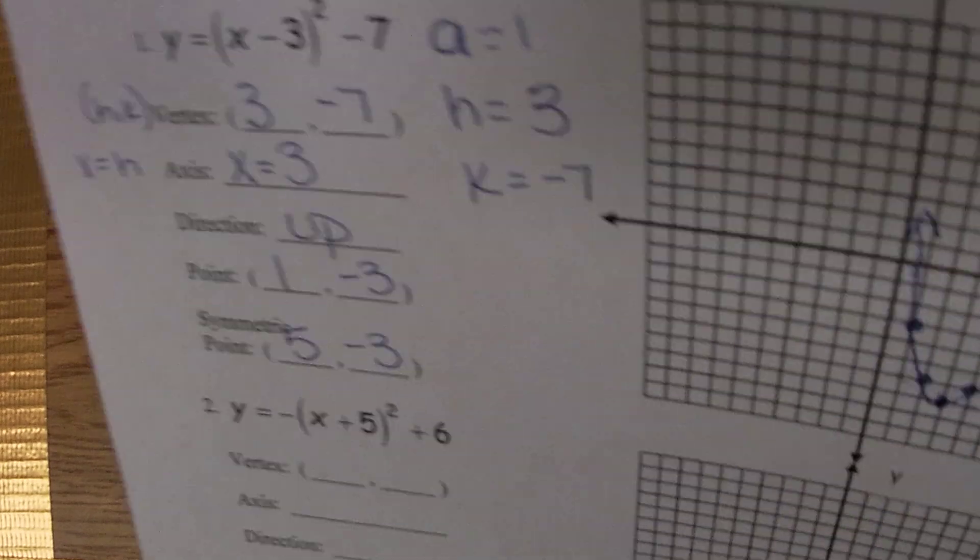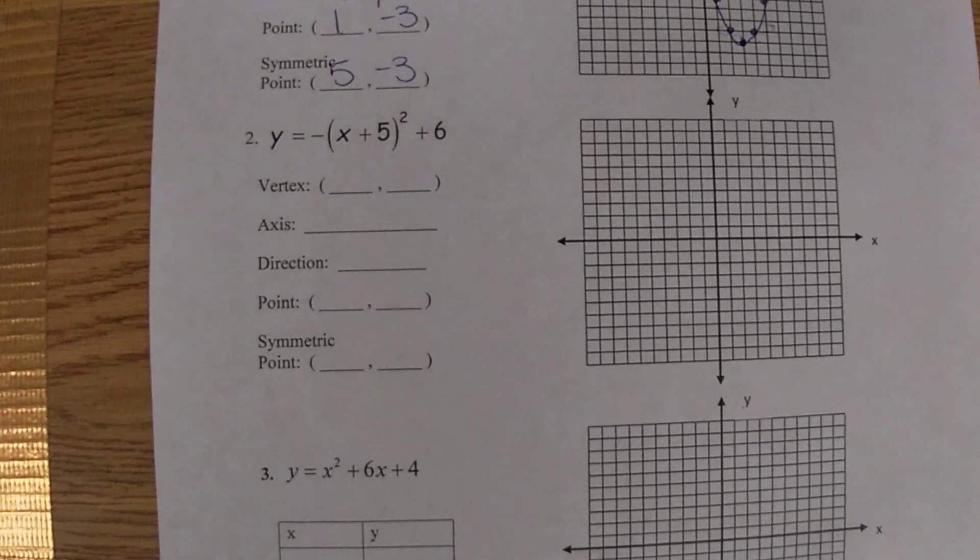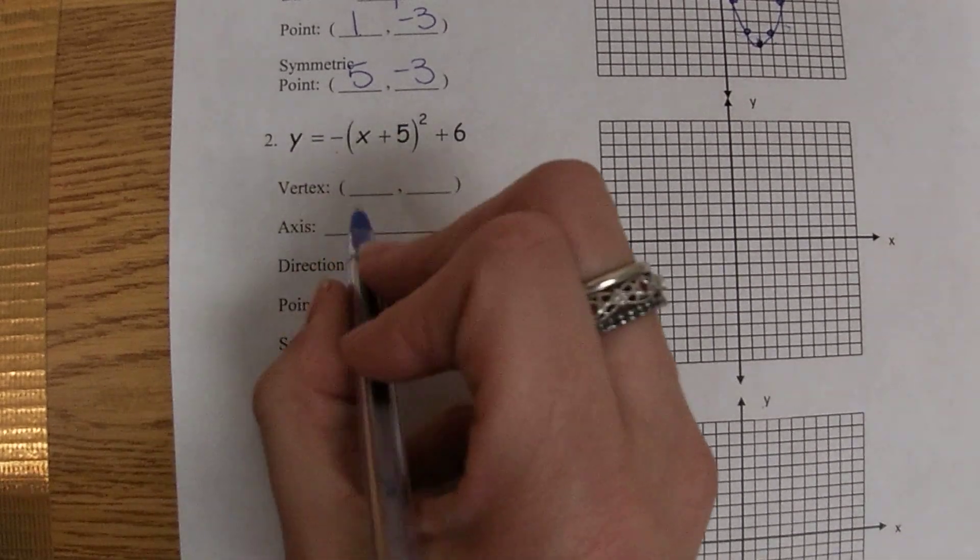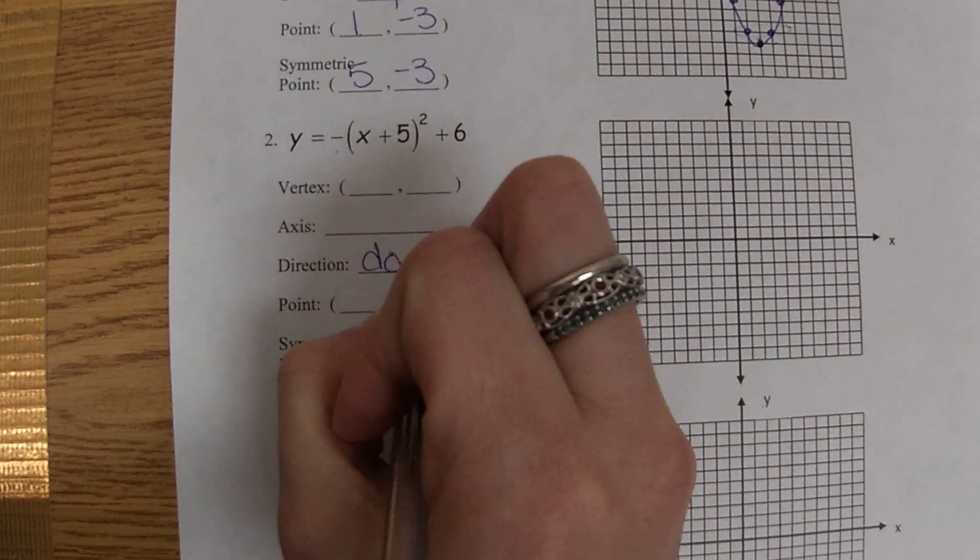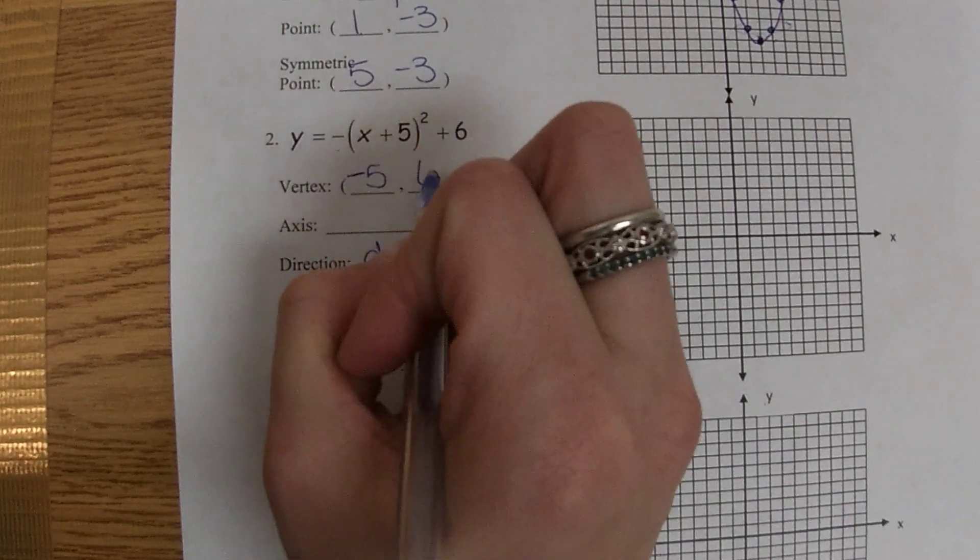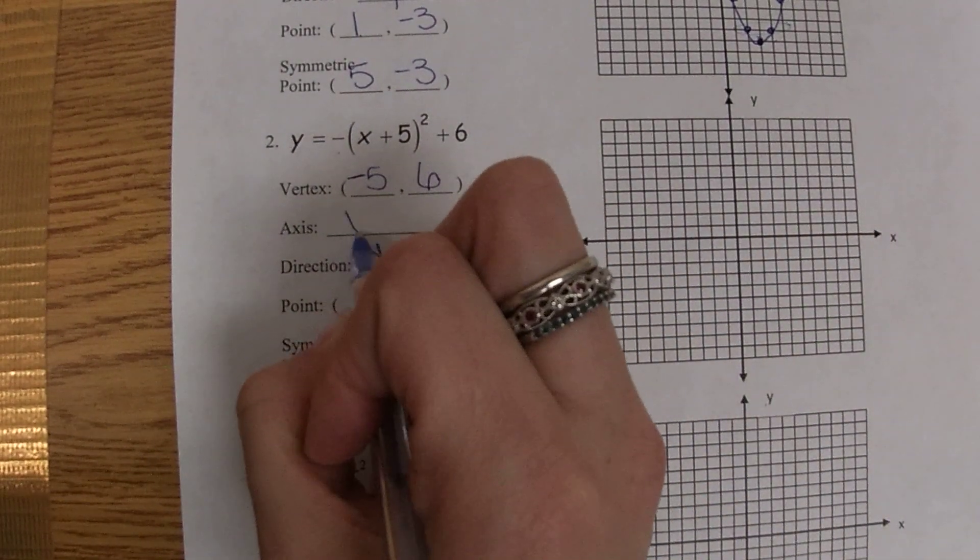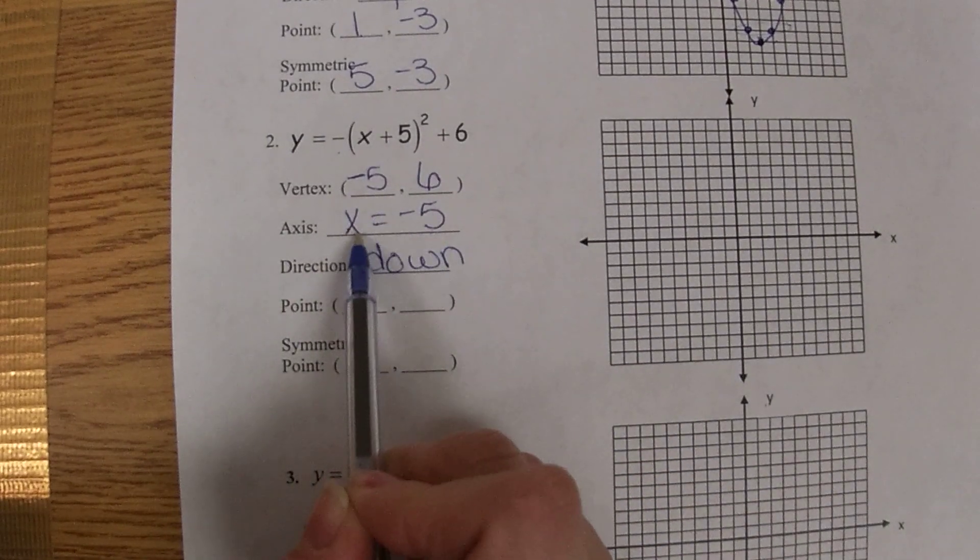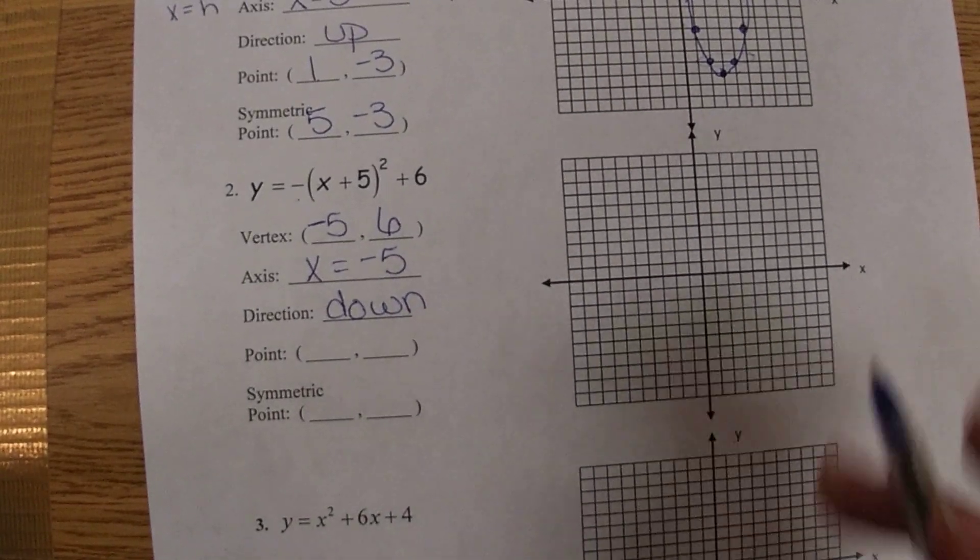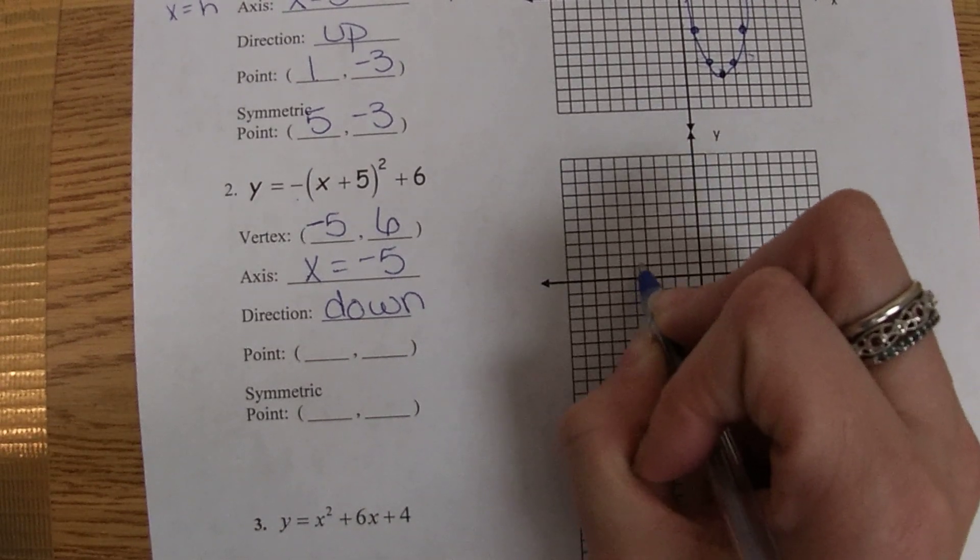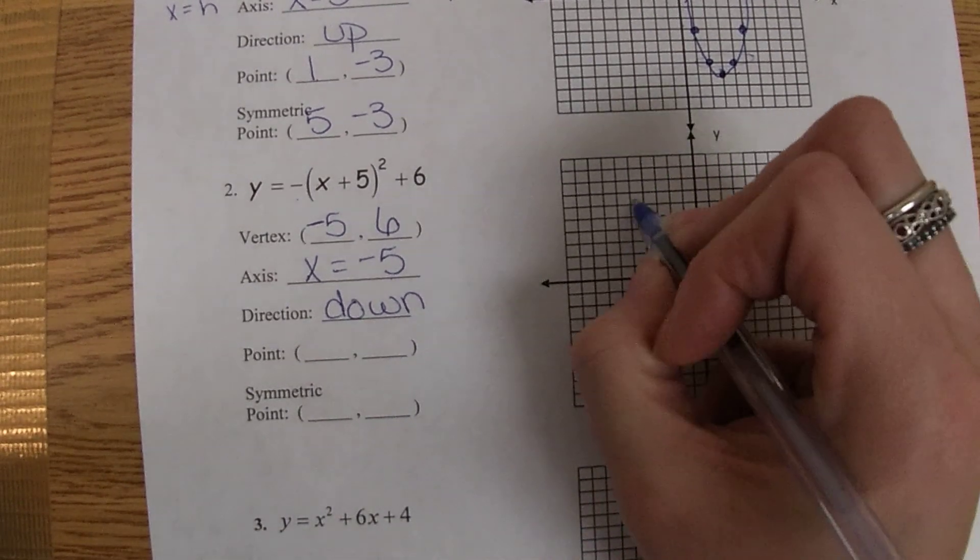If we look at number two, we know that this is going to open down. Our a is negative one, our h is negative five, and our k is positive six. So that means our axis of symmetry is x equals h, so x equals negative five. So I'm going to plot the point negative five positive six.